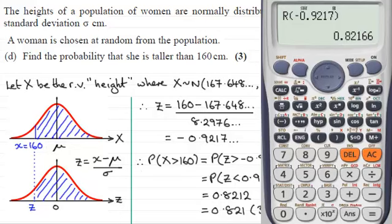You can see it's close to the result we got with tables but slightly different. This calculator result is actually a little more accurate than the tables. So there we go — a couple of ways of working that out.